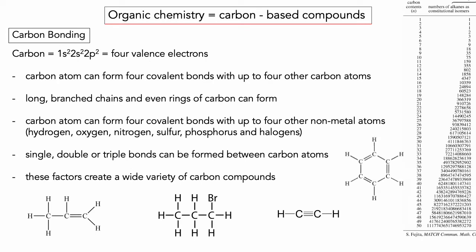Before we jump into alkanes, let's have a quick look at carbon and why it's so important in organic chemistry. Some people call it carbon chemistry. An organic molecule is one that has a carbon structure to it. A couple hundred years ago it was thought that only organisms could synthesize these molecules, then someone accidentally created urea in the 1800s, and it was realized we don't need an organism to synthesize these types of molecules. But the name organic chemistry has stuck.